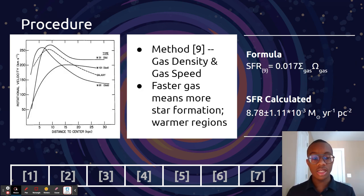Method nine uses gas density, how close the gas is, and gas speed, how fast the gas is going. Faster gas means more star formation and warmer regions.